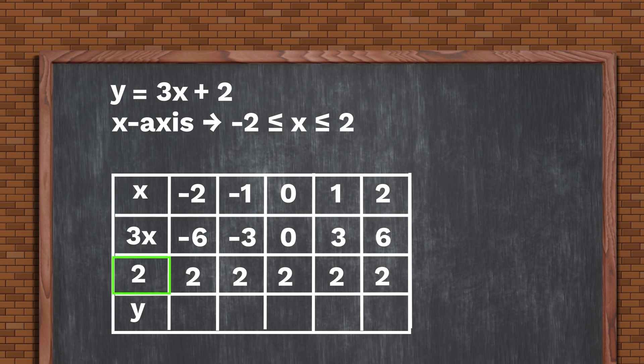Therefore, we have minus 6 plus 2, which equals minus 4. Minus 3 plus 2 equals minus 1. 0 plus 2 equals 2. 3 plus 2 equals 5. And 6 plus 2 equals 8.